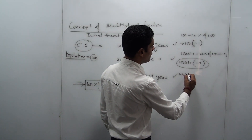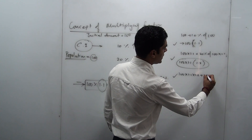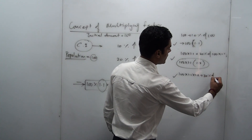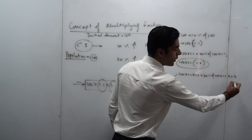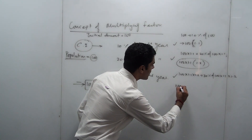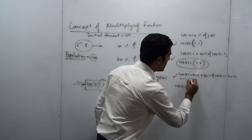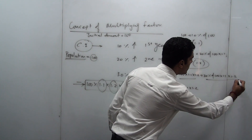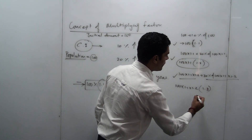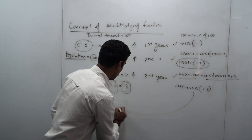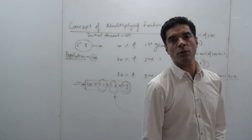In the third year, an increment of 30% is happening on this amount, so it is 100 into 1.1 into 1.2 plus 30% of 100 into 1.1 into 1.2. Taking 100 into 1.1 into 1.2 common, you are left with 1 and 0.3, which directly gives you 100 into 1.1 into 1.2 into 1.3. This is the shortcut for solving this equation.